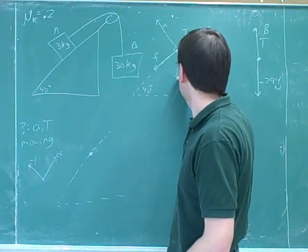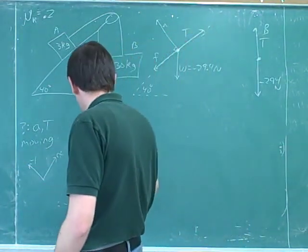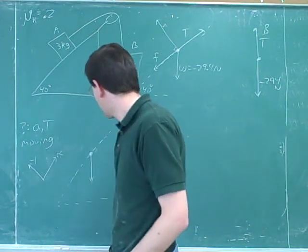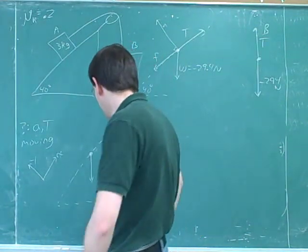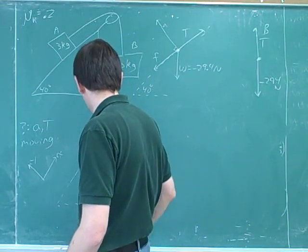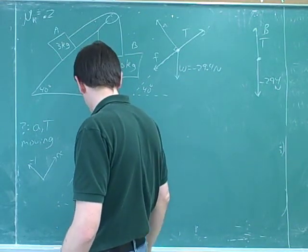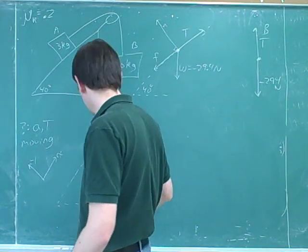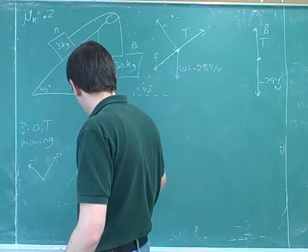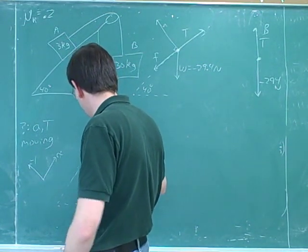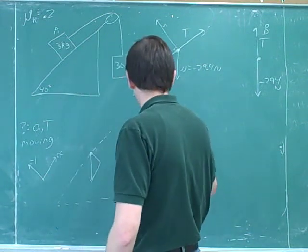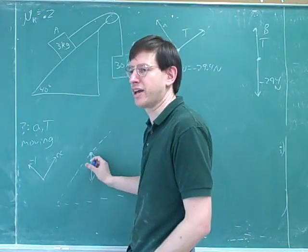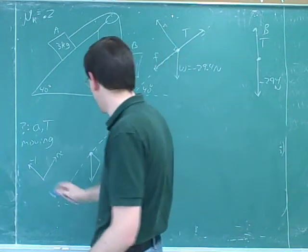So the only thing we have to break into components is the weight. We want to draw our triangle — you can draw it either above or below the line. Remember to make the legs parallel to the axes. Don't draw a triangle with horizontal and vertical legs; draw a triangle where the legs are parallel to our axes.